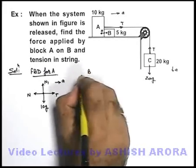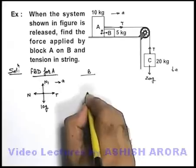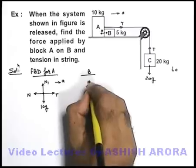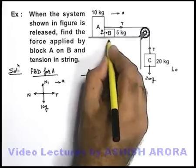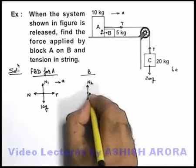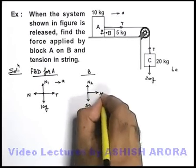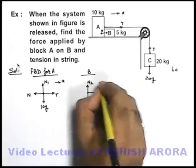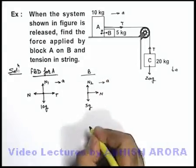Similarly if we draw free body diagram for block B, we can see it is in downward direction 5g. Upward it is N2. N2 is the force which ground is exerting on block B. And this B is moving toward right due to this normal reaction which A is applying on B. It is also moving toward right with an acceleration A.